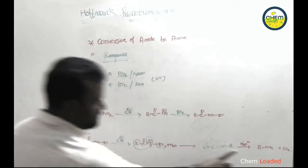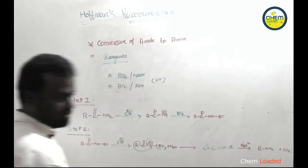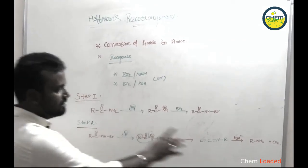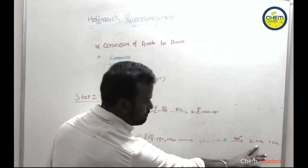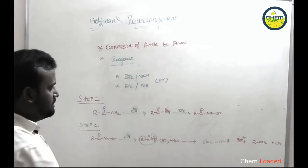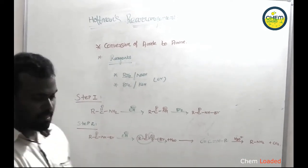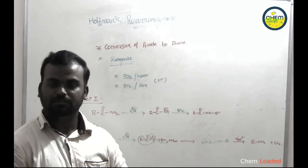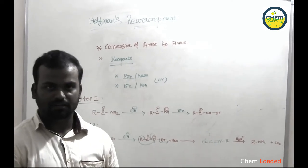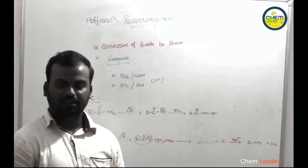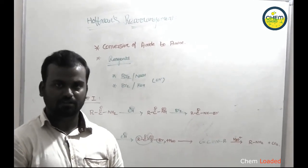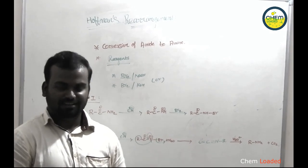Amide will become amine — that is the intermediate and product. You can see the results in the channel. Subscribe and comment. Thank you.